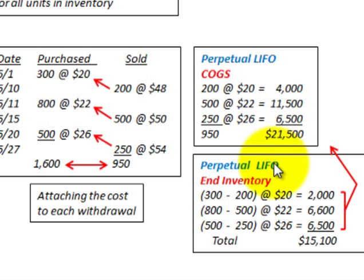This summarizes how we handle perpetual LIFO versus periodic LIFO — the two methods produce different cost of goods sold and ending inventory values because perpetual LIFO matches costs to each individual sale as it occurs, while periodic LIFO applies the most recent costs in aggregate at the end of the period.